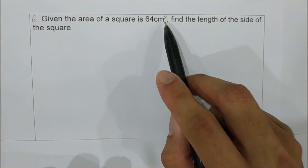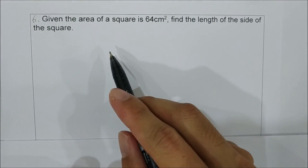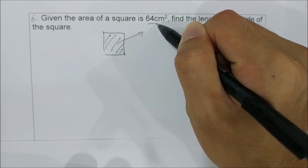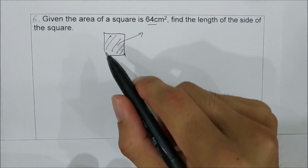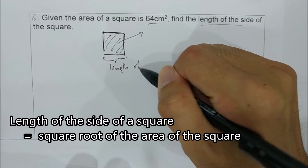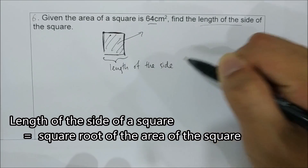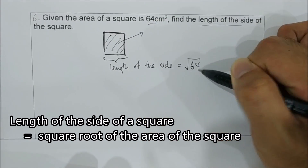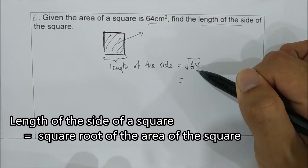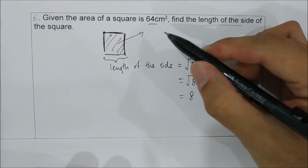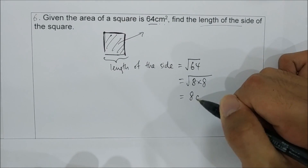Question 6: given the area of a square is 64 cm², find the length of the side of the square. To find the length of the side, we take the square root of 64. Since 64 is 8 times 8, the square root is 8. The unit, since the area was in cm², the side length is 8 cm.